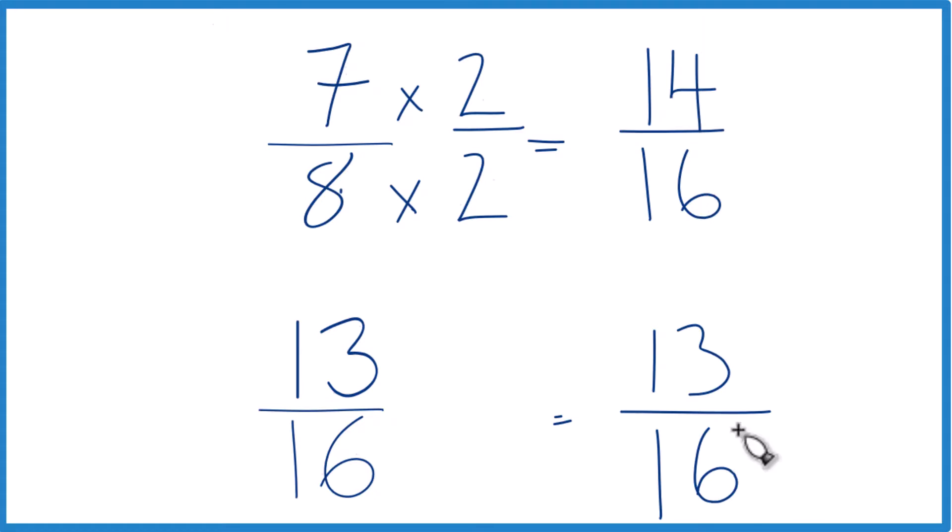But now, same denominator. Let's just compare the numerators. 14 is greater than 13, 14 sixteenths is greater than 13 sixteenths. Since these are equivalent, 7 eighths, that's greater than 13 sixteenths.